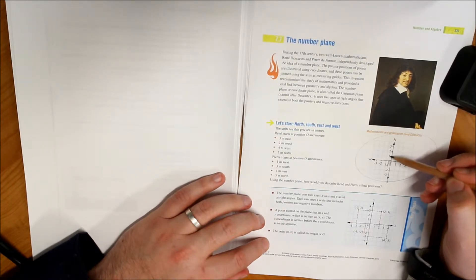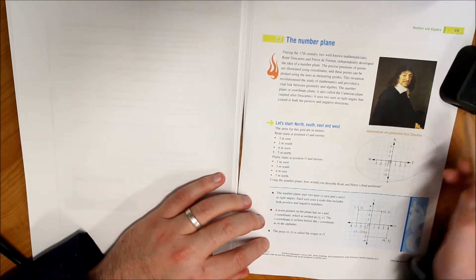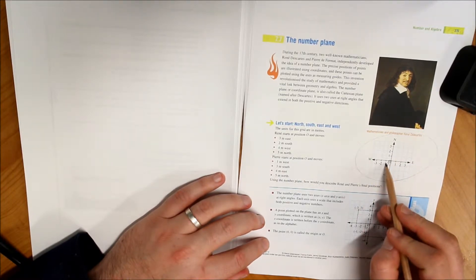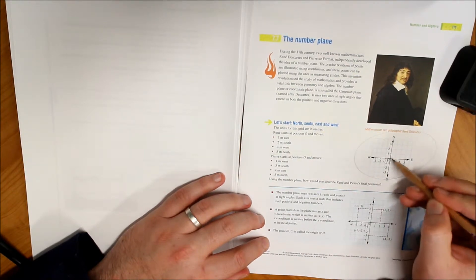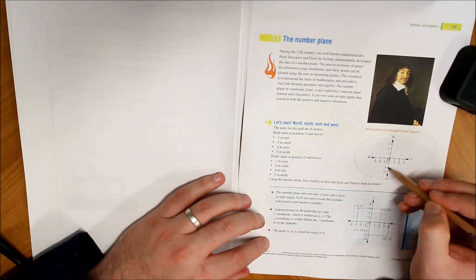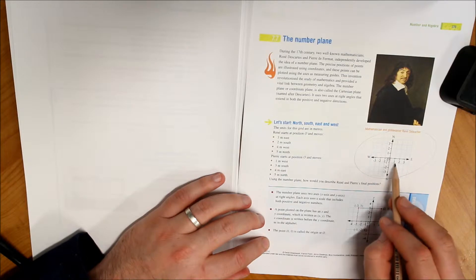And it goes up into one, two, three moving up. If we move to the west, though, we've got negative one, negative two, negative three. If we move south, obviously we've got negative one, two, and three. And if we move east, we've obviously got one, two, three.